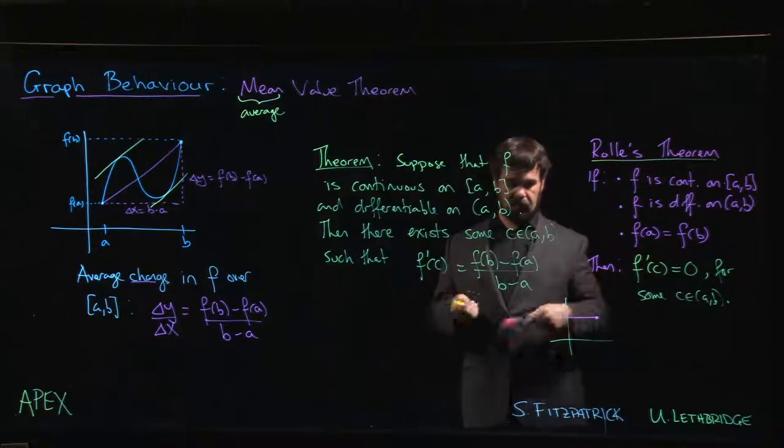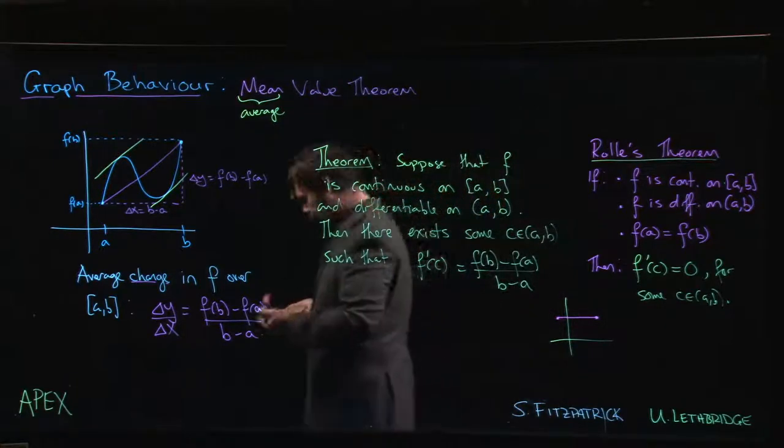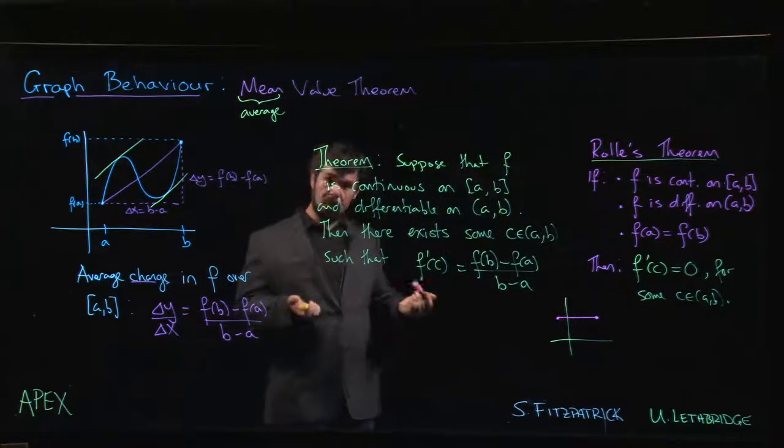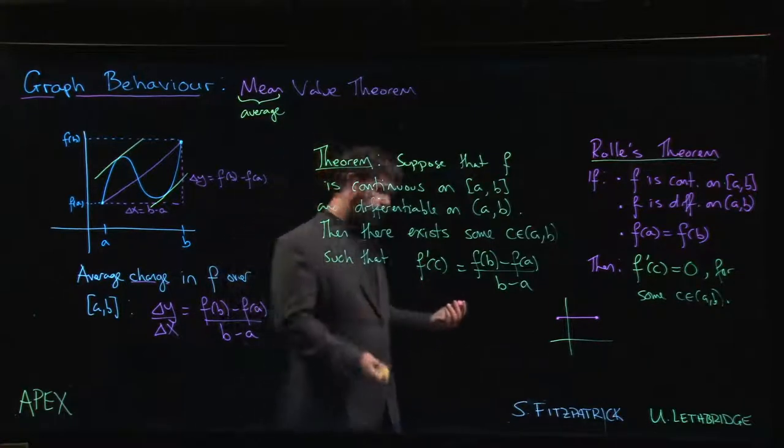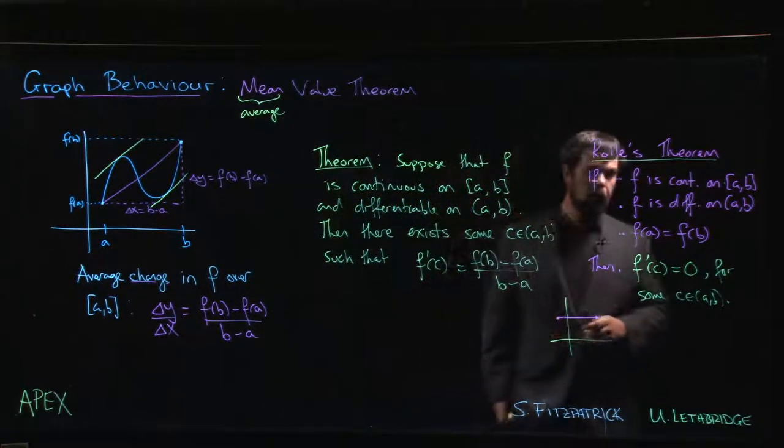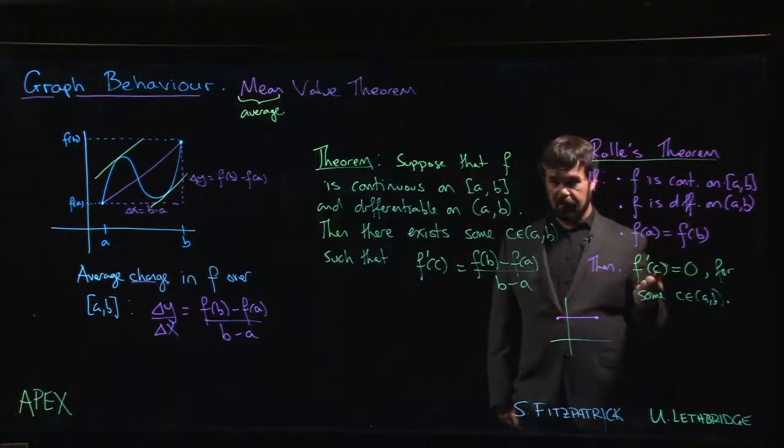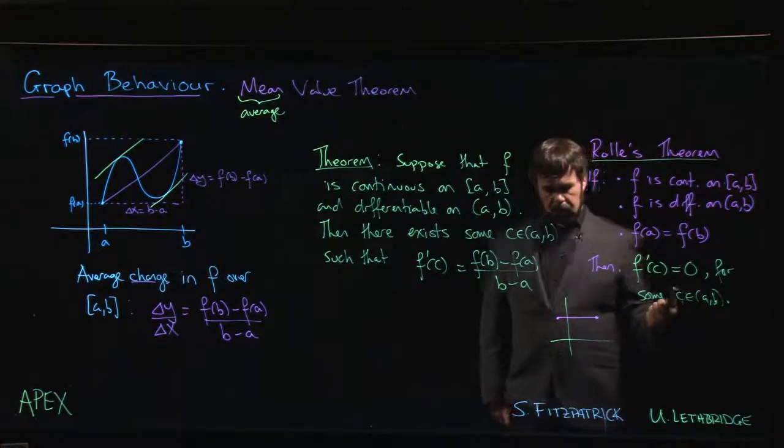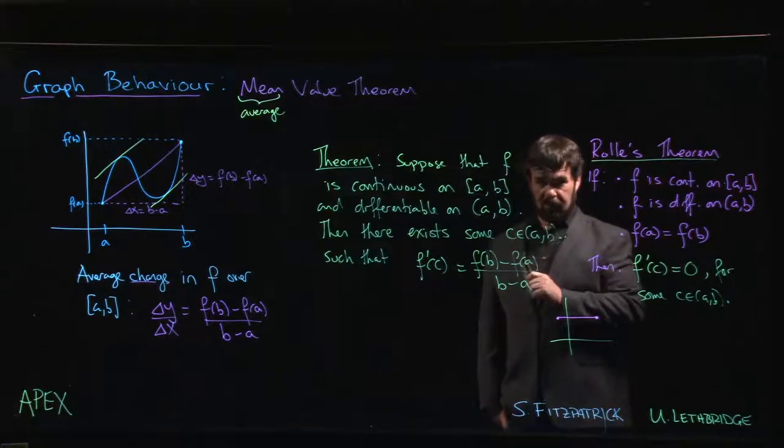Now suppose that your function is not constant. Well, if it's not constant, we know from the Extreme Value Theorem that the function still has to have an absolute maximum and an absolute minimum, and they can't both occur at the endpoints.